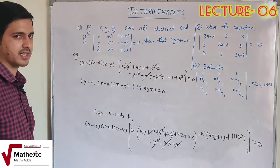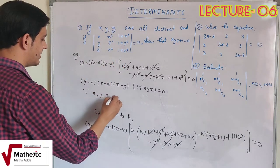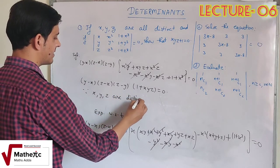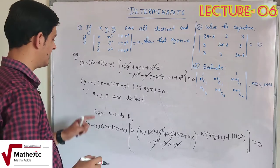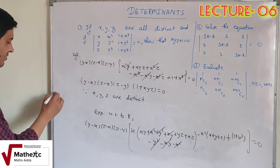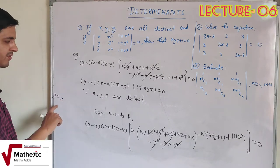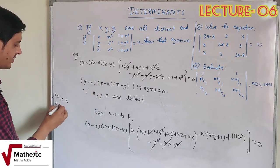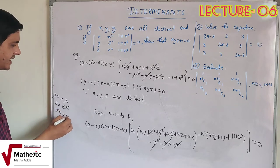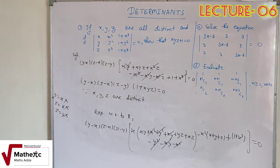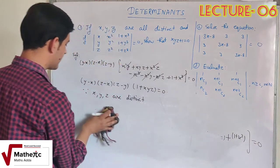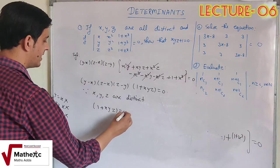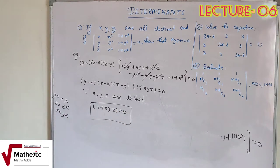अब condition use करते हैं: since x, y, z are distinct — चारों terms का multiplication 0 है। (y−x) = 0 होगा तो y = x, जो possible नहीं क्योंकि x, y, z तीनों अलग हैं। Similarly z = x और z = y भी possible नहीं। इसलिए सिर्फ एक ही possibility है: 1 + xyz = 0. यही हमको prove करना था। पहले question का solution complete हुआ।